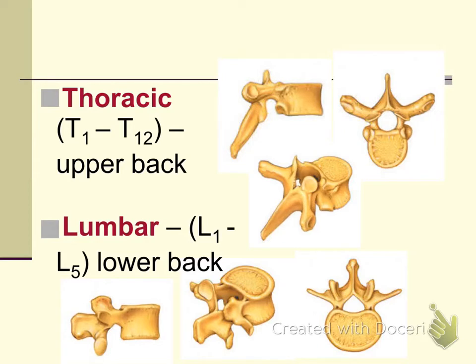The last five vertebrae are called the lumbar vertebrae, which make up the lower back spine. They are numbered L1 to L5. Distinct features of the lumbar vertebrae include a very big and tall body, a very blunt and short spinous process, and they are much bigger overall than the cervical and thoracic vertebrae.